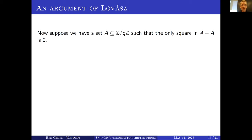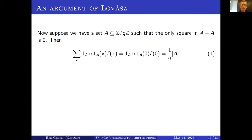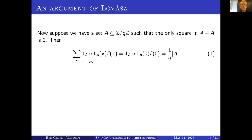Suppose I have a set A ⊂ ℤ/Qℤ such that the only square in A − A is zero. Then I can write down the following expression: (1_A ∘ 1_A)(x) · F(x), where (1_A ∘ 1_A)(x) is basically the convolution of A with the characteristic function of −A — the number of ways of writing x as a difference of two elements of A.